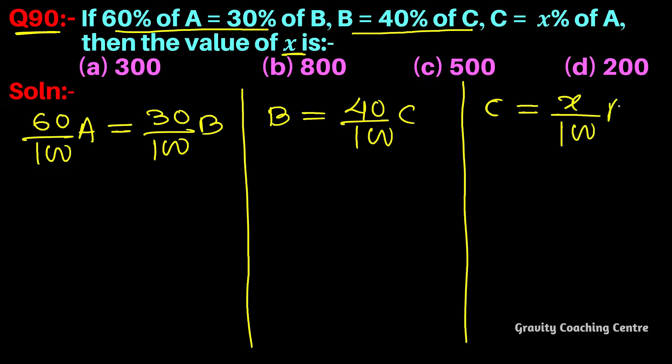So this is 100 to 100 cancel, 0 to 0, 3 to 6 gives 2A equals B. And this is 0 to 0 cancel and 2 to 5, B equals 2C upon 5.